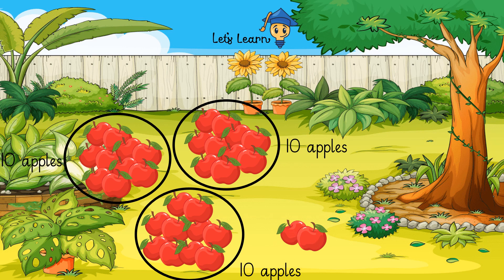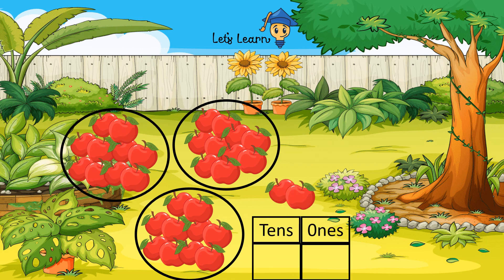Let's see how to count them and write them as a number. After dividing the apples into groups, it will be easy for us to count them. You can see a box over here where tens and ones is written. First we are going to count the apples which are left alone and which are not a part of any group. How many apples are there? 1, 2. So 2 is a single digit number — it will go in ones.